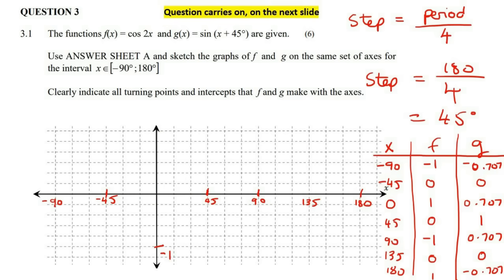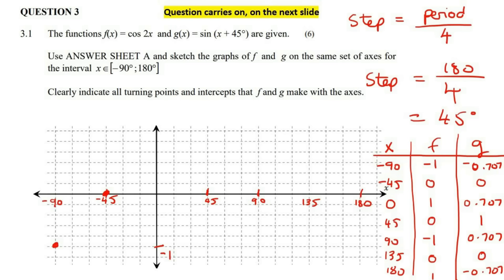Now let's plot. Starting with graph f (cos2x): at x = minus 90, y = minus 1; at x = minus 45, y = 0; at x = 0, y = 1; at x = 45, y = 0; at x = 90, y = minus 1; at x = 135, y = 0; at x = 180, y = 1. Connect the points and that is the graph of f.